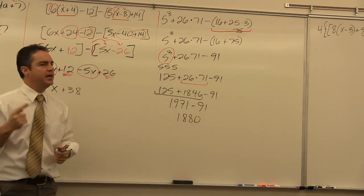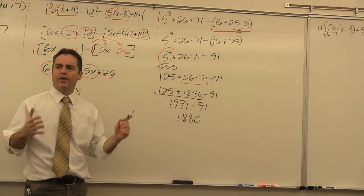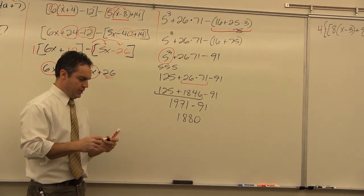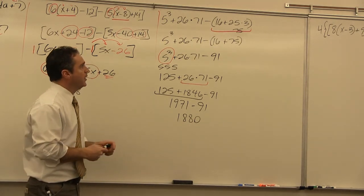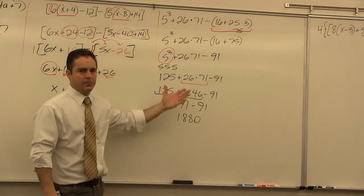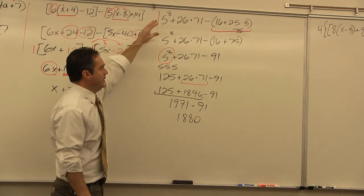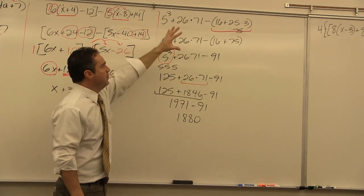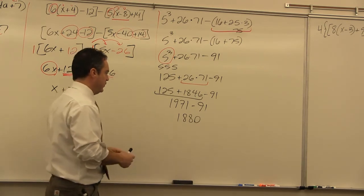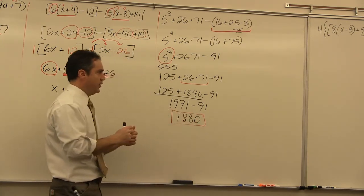Am I done? I just have one number left, so I am complete. There was no variable in this problem — we were simplifying a numerical expression using the order of operations. Our final answer is 1880.